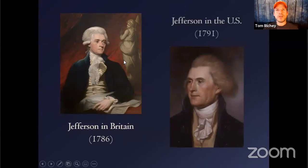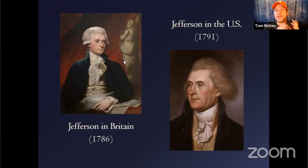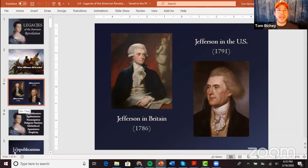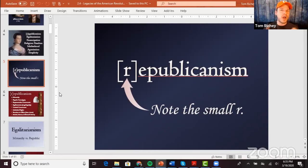But then look at Thomas Jefferson in 1791, only five years later in the United States. We don't want to dismiss this as just a political revolution — notice that he's got just his natural hair. He shed the powdered wig. The elites no longer want to look like aristocrats, even if they are. Jefferson was undoubtedly an aristocrat. We also see this concept of republicanism, which did not really exist under the British system.